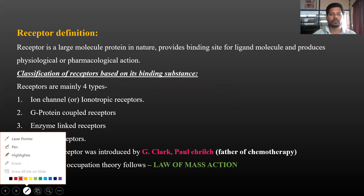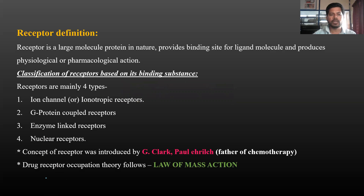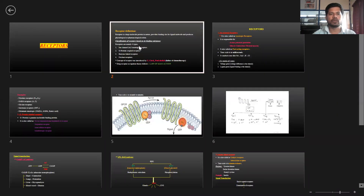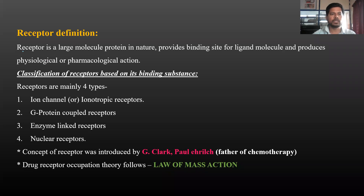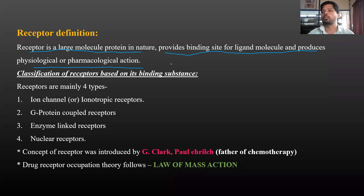The receptor is a large molecule, protein in nature, which provides a binding site for the ligand molecule and produces a physiological or pharmacological action. So if you bind a receptor with a ligand molecule, it produces a physiological function or a pharmacological action. The receptor is made of amino acids.